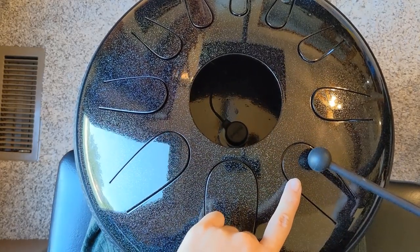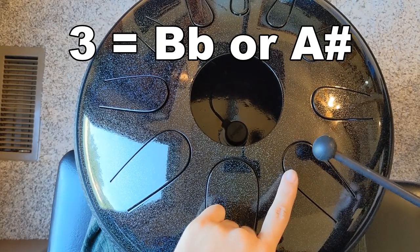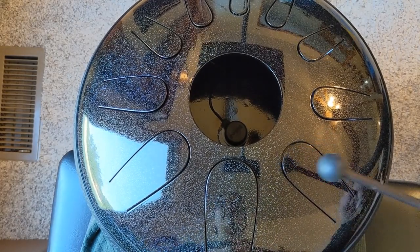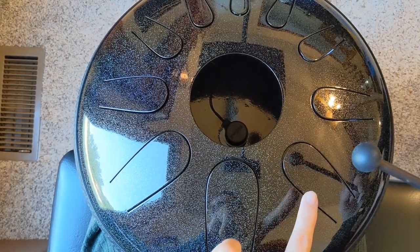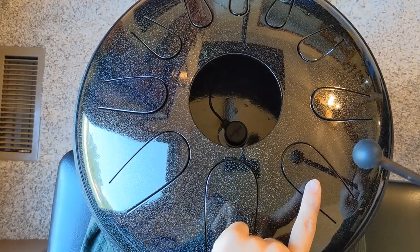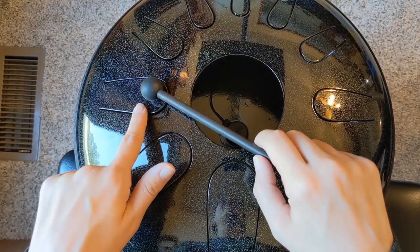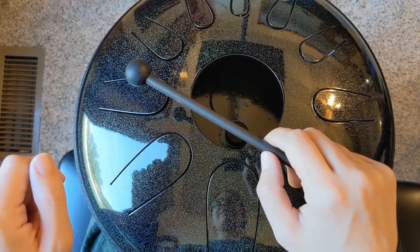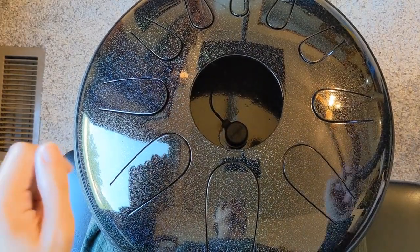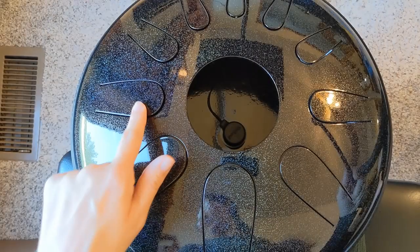And then on tongue number three, we're gonna start to build that minor chord. This one is gonna be B flat. Okay, and then on tongue number four, we're gonna go to a D flat. Here is our blue note. You can already hear how cool that sounds. And I guess we've got our blue note.